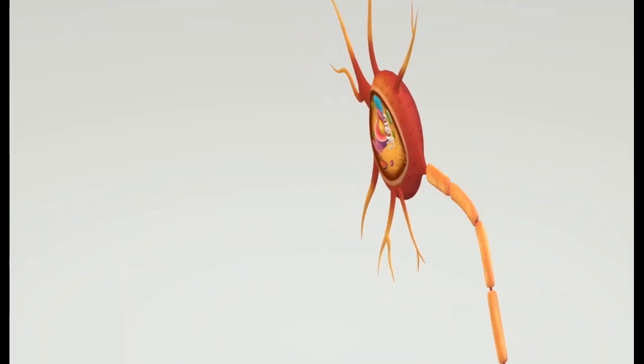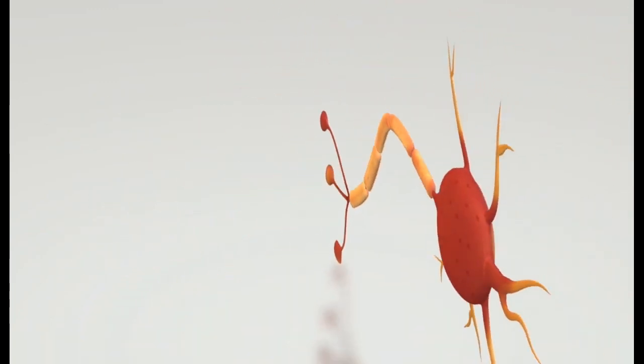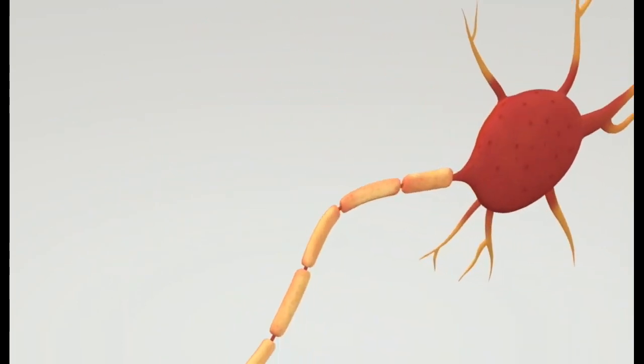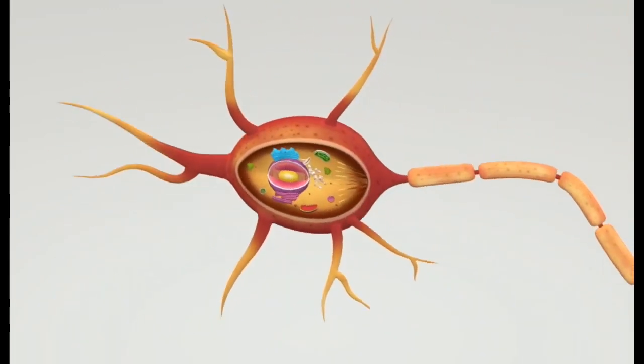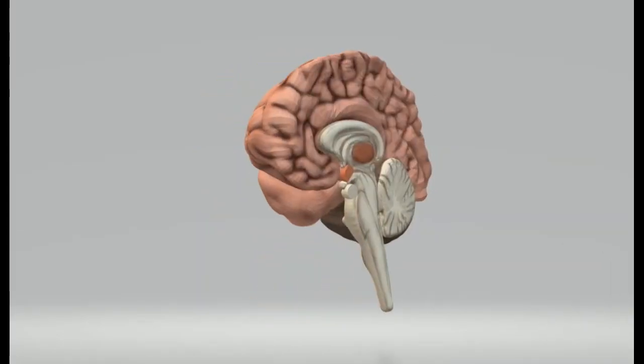Nervous system. Our nervous system is the control center of our body. Our nervous system carries messages to and from different parts of our body and controls activities inside and outside of our body.